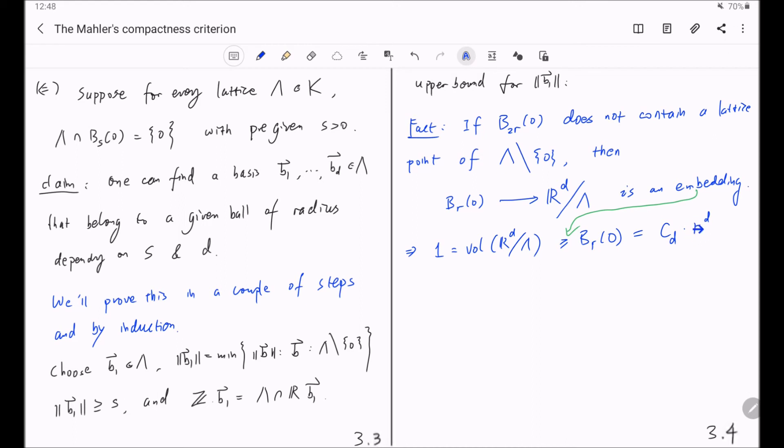But if you choose r to be bigger than that, if you choose r to be, say, 1 over c_d raised to the power 1 over d plus 1, then if we have the ball centered at 0 with radius twice of that, then 2 times this power plus 2 centered at 0 contains b_1, the vector b_1.